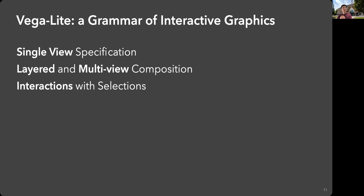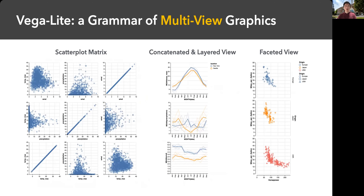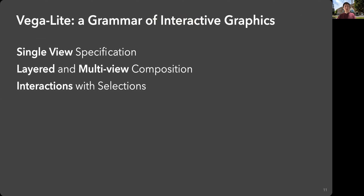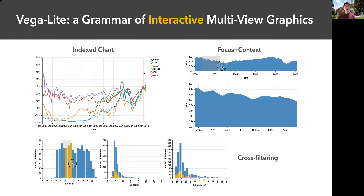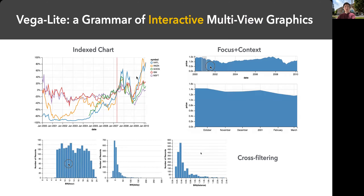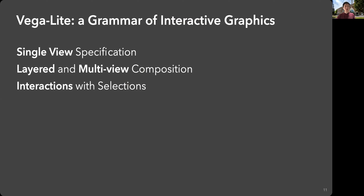In this and the next lecture, we're going to cover these different things. First is single view — just one chart, which can be different types like bar chart or line chart. The second is layered and multiple view composition, where you compose multiple simple charts together to form a more complex visualization. Finally is interaction — how to create mouse over, focus plus context, or cross filtering visualizations.